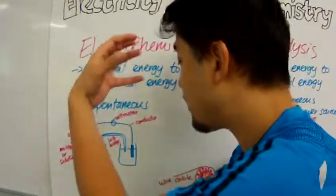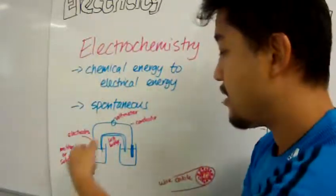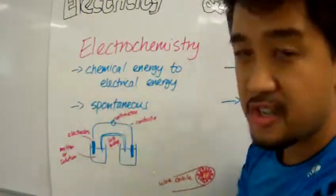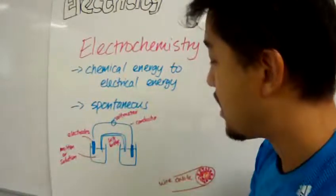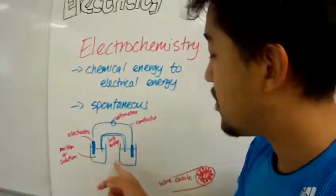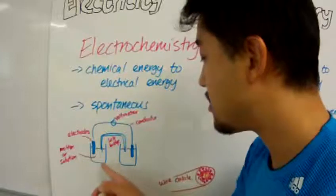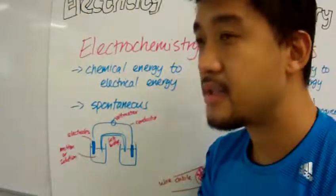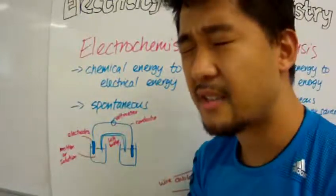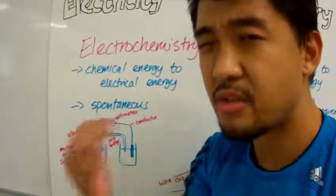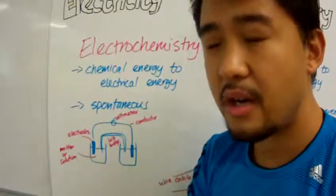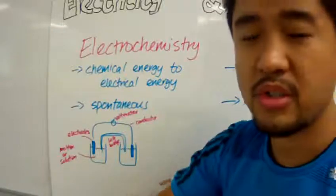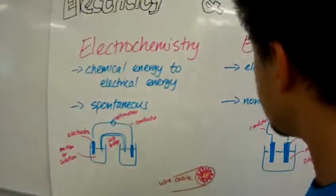When you mix the thing together, the reaction is going to happen spontaneously. Electrons are going to go from one end to the other end. And between the two cells, two mini beakers, there's a salt bridge. This salt bridge is kind of like an ion selector where it allows specific ions to pass through the salt bridge while not letting other ions go through. So it's very selective.